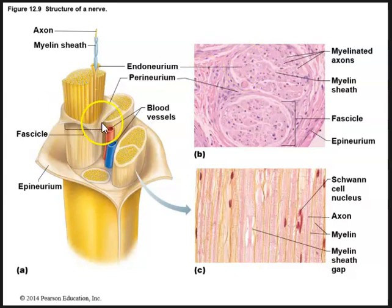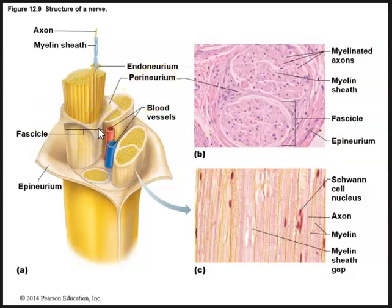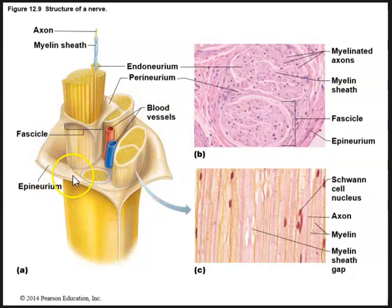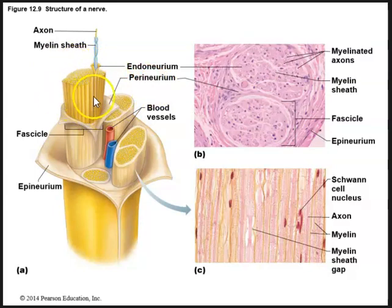A whole fascicle — this whole circle — the connective tissue surrounding the fascicle is the perineurium. So perineurium is the connective tissue that surrounds the fascicle. And then you have a bunch of fascicles that make up the nerve, surrounded by the outermost connective tissue, which is the epineurium. So innermost is the endoneurium, which surrounds a single axon and myelinated sheath; then the perineurium surrounding the fascicle; and then the epineurium surrounding all the fascicles.